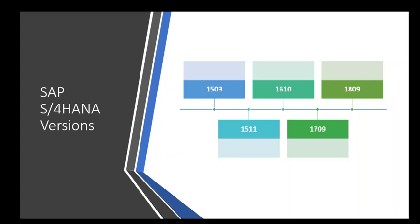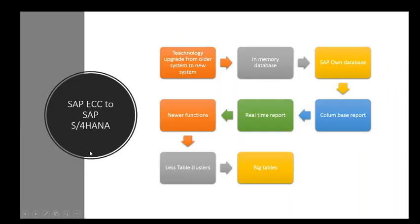The first version of SAP S4 HANA came out around 2015 and was called 1503. After that they released newer versions: 1511, 1610, 1709, and 1809. As of February 2019, 1809 is the latest version on the market, while 1503 was the very first released version.